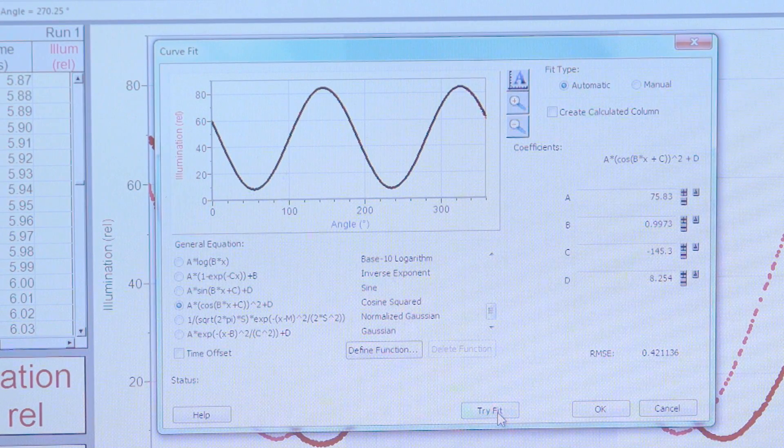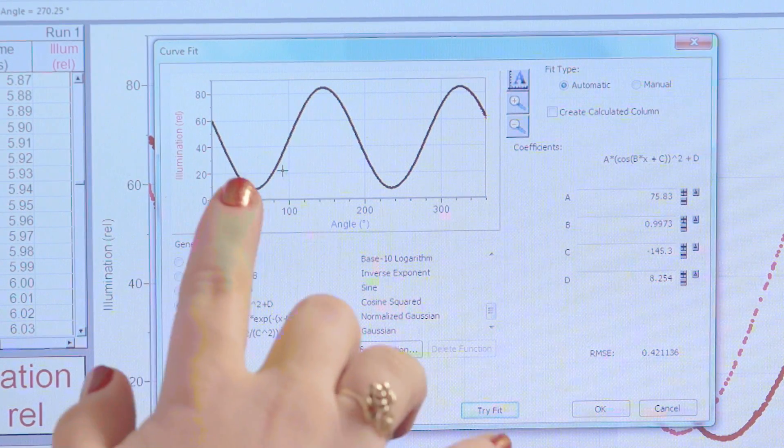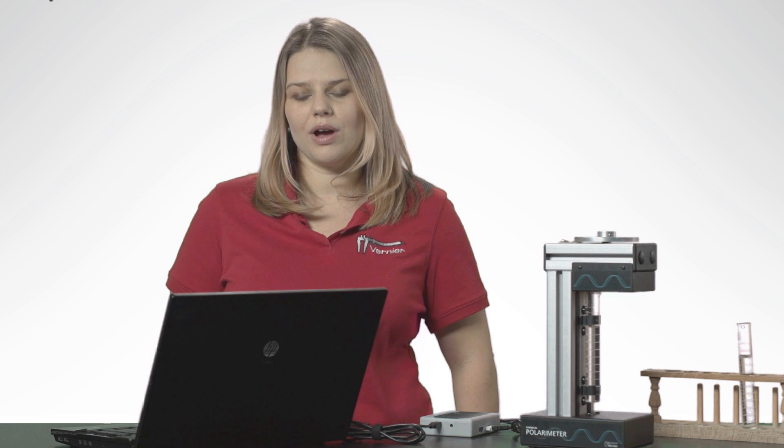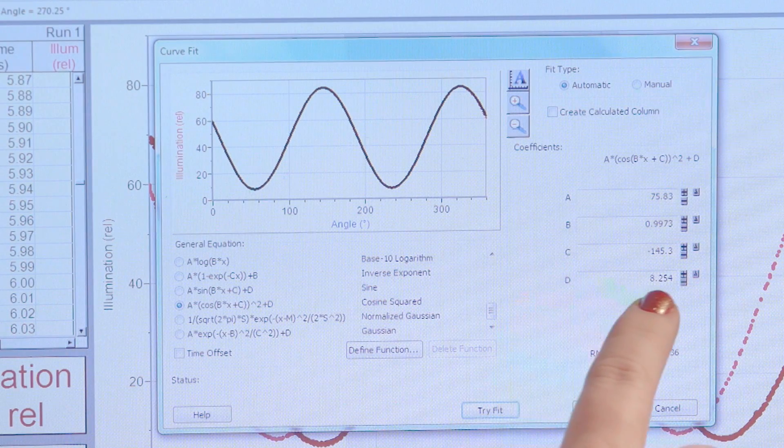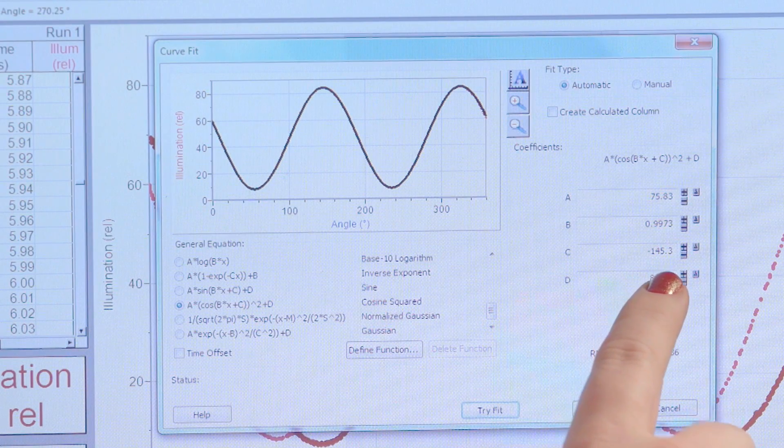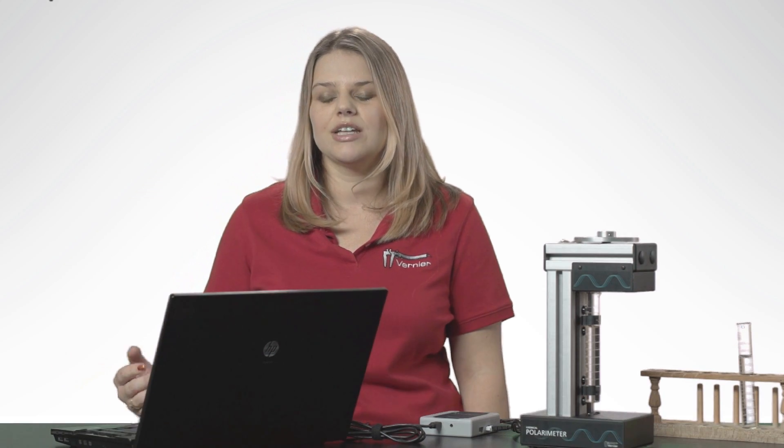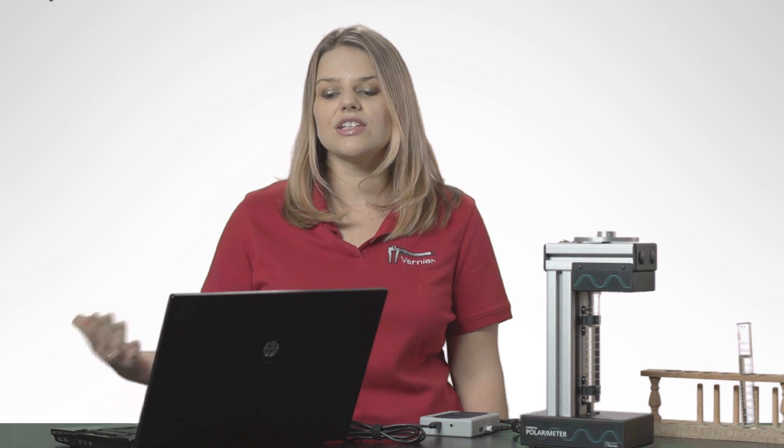You see the curve fitting black line lies perfectly on the graph screen. The coefficient that we care about with the cosine squared fit is the opposite sign of the c value. The c value here reads negative 145.3. Therefore, the angle at maximum illumination is positive 145.3. This is for the blank.